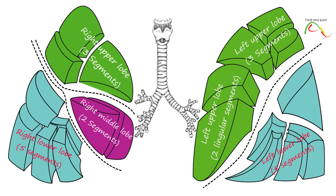Bronchopulmonary segments are the anatomic and functional units of the lungs. Since each has its own separate air and blood supply, one segment can be surgically removed without affecting others.